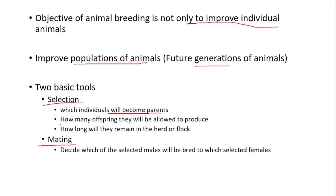Secondly, they decide how many offspring these selected individuals will be allowed to produce and how long they will remain in the herd or flock, and when they will need replacement. So in selection, animal breeders mainly make three major decisions: the selection of animals, how many offspring an animal will produce, and how long a selected individual will remain in the population. In mating, animal breeders decide which selected males will be bred to which selected females.